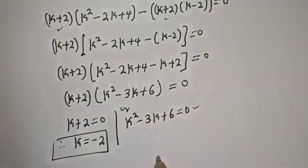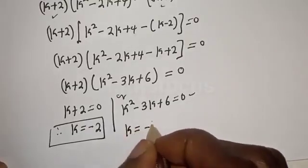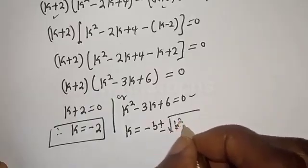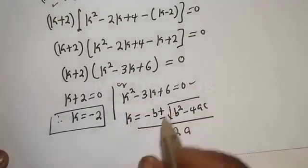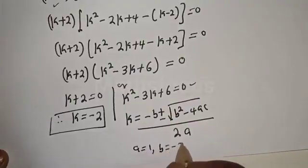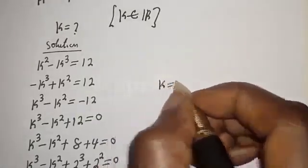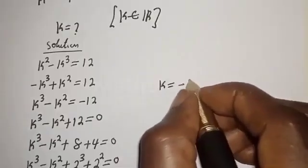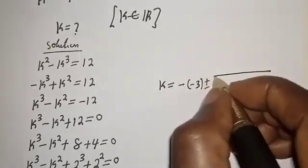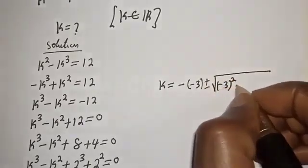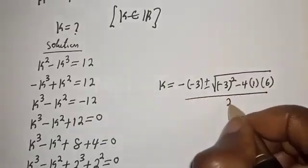This is a quadratic equation, which can be solved using the quadratic formula. The quadratic formula gives k equal to minus b plus or minus square root of b squared minus 4ac, over 2a. From this equation, a is equal to 1, b is equal to minus 3, and c is equal to 6. Therefore k is equal to minus bracket minus 3, plus or minus square root of minus 3 squared minus 4 multiplied by 1 multiplied by 6, over 2 multiplied by 1.